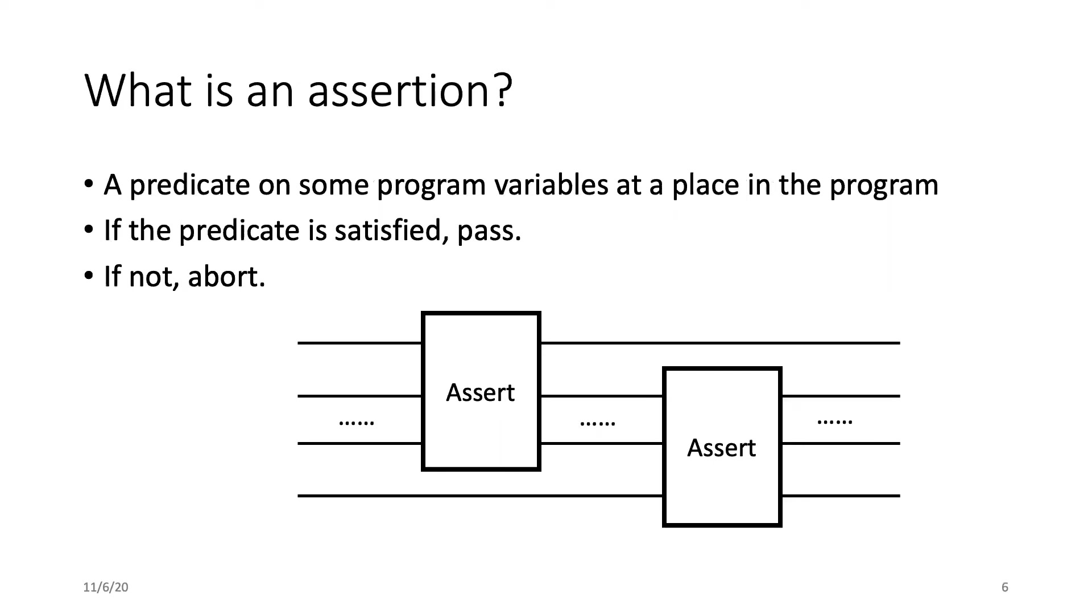Another keyword we will talk about is assertion. The term assertion in the scenario of software testing is a predicate on some program variables at a place in the program. When running an assertion, the program will check if the predicate in the assertion is satisfied. If so, the program will continue. Otherwise, the program should abort and report the error. In a quantum scenario, assertion, for example, in a quantum circuit, can be considered as a circuit block on some qubits. And in this talk, we will figure out how to design and implement these blocks.